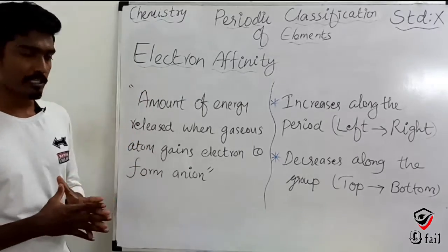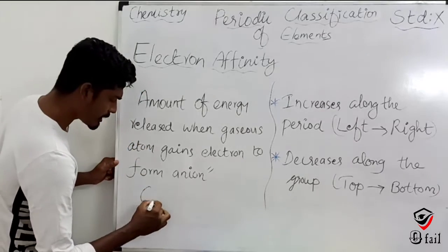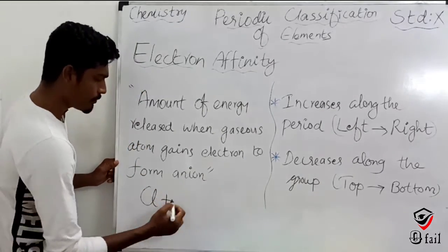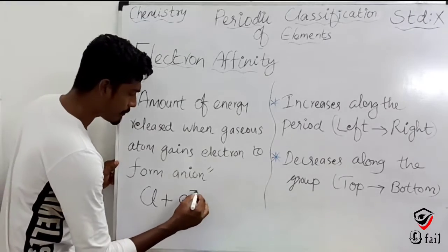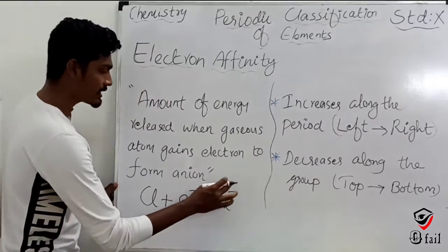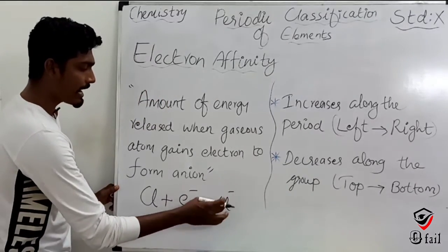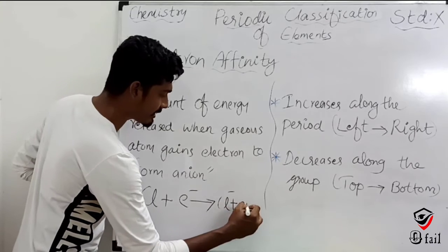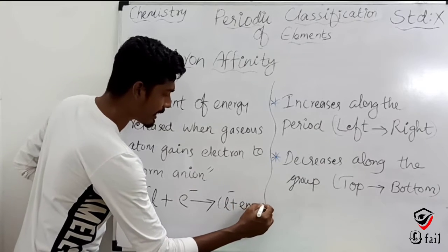For example, with chlorine: an electron is gained by the chlorine atom, and energy is released. This is electron affinity.